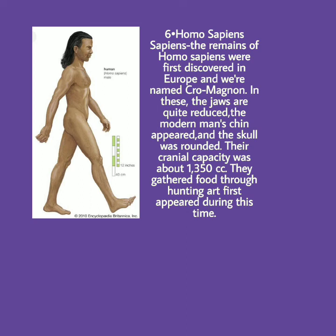The last stage of human evolution is Homo sapiens sapiens. The remains of Homo sapiens sapiens were first discovered in Europe and were named Cro-Magnon. In this stage, the jaws became equipped with teeth, the modern human chin appeared, and the skull was rounded. Their cranial capacity was about 1,350 cc. They gathered food through hunting, and art also appeared during this time.